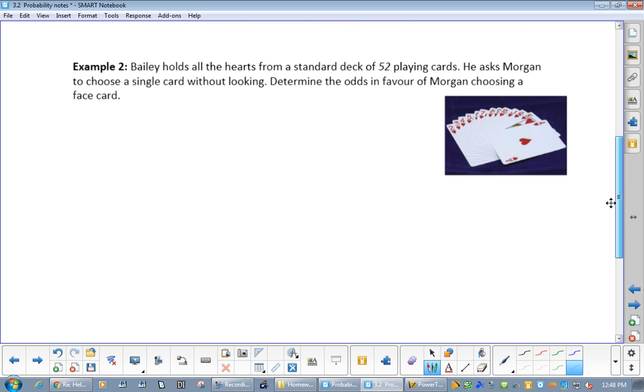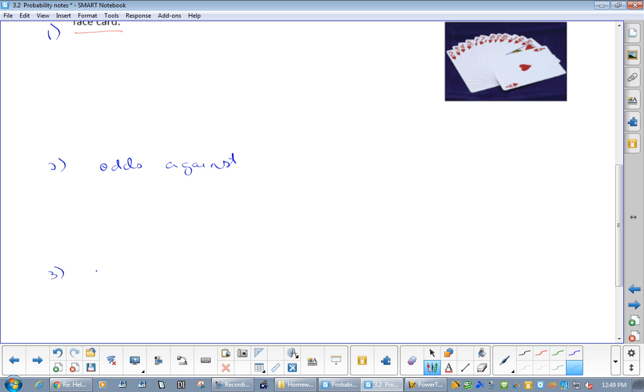Now, Bailey holds all the hearts from a standard deck of 52 playing cards. Alex, I need you paying attention here. He asked Morgan to choose a single card without looking. Determine the odds in favour of Morgan choosing a face card. Do it on your own. What are the odds in favour of Morgan choosing a face card? So that's number 1. And then I want you to do 2 as well. What are the odds against? And 3, what's the probability of getting a face card?